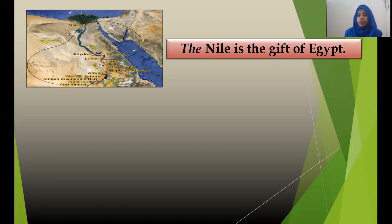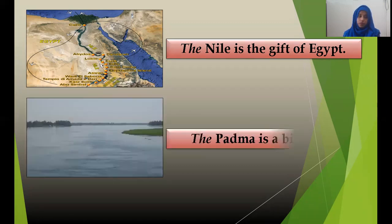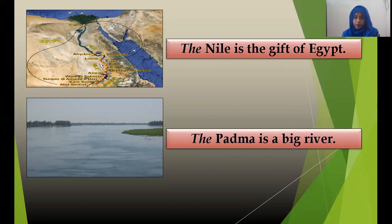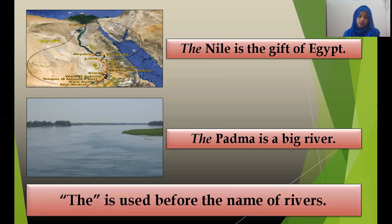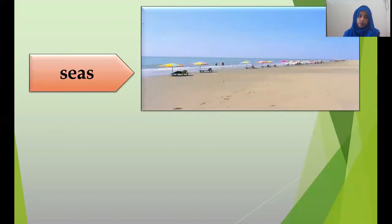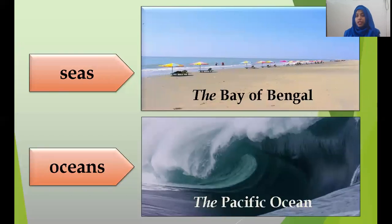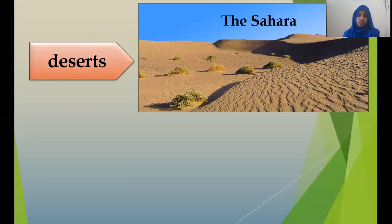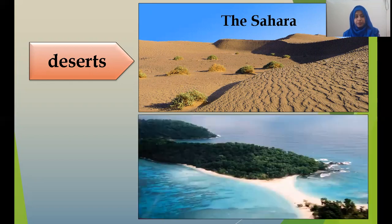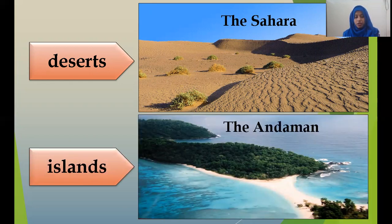The Nile is a river — 'The Nile is the gift of the desert' — so we use the article before the name of a river. Similarly, we use 'the' before seas such as 'the Bay of Bengal,' and oceans such as 'the Pacific Ocean.' For deserts, for example, the Sahara is the name of a desert, so we use 'the Sahara.' The article 'the' is also used before groups of islands.